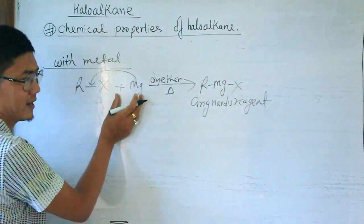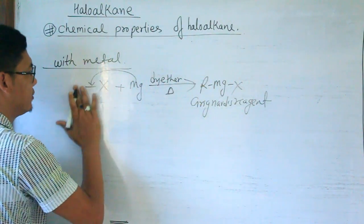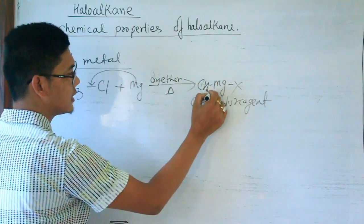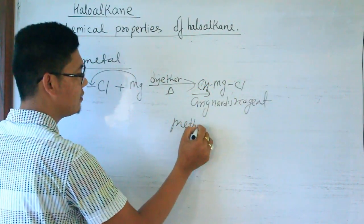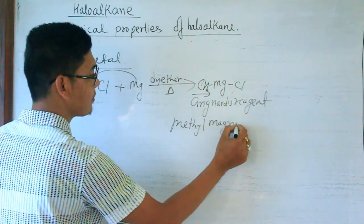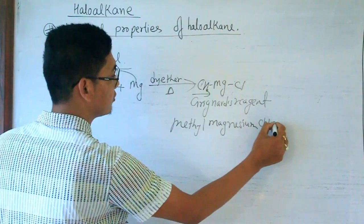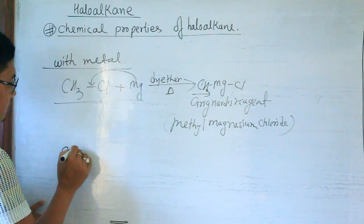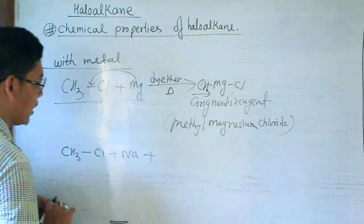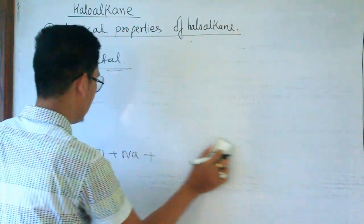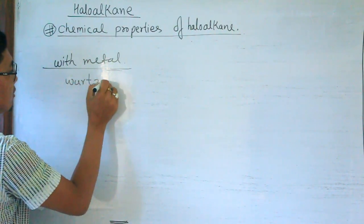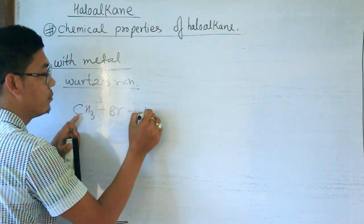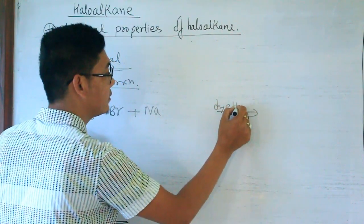Grignard's reagent (RMgX) is prepared when a haloalkane reacts with magnesium in dry ether. Another reaction is the Wurtz reaction: haloalkane reacts with sodium metal in dry ether. For example, CH₃Br reacts with sodium — Br⁻ and Na⁺ leave as sodium bromide — and two methyl groups couple to form ethane. The number of carbons doubles.